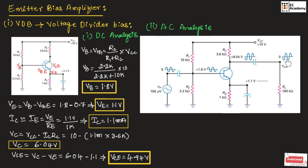The load voltage, which is the output voltage, is the same as the collector voltage, except that it has a DC level of 0 volt. The voltage across the emitter terminal is pure DC, which is 1.1 volt, because all AC signals pass through the bypass capacitor towards ground. That's why only DC voltage is available across the emitter terminal. If the bypass capacitor is not connected, an AC voltage will appear across the emitter and ground, making the amplifier circuit unstable.